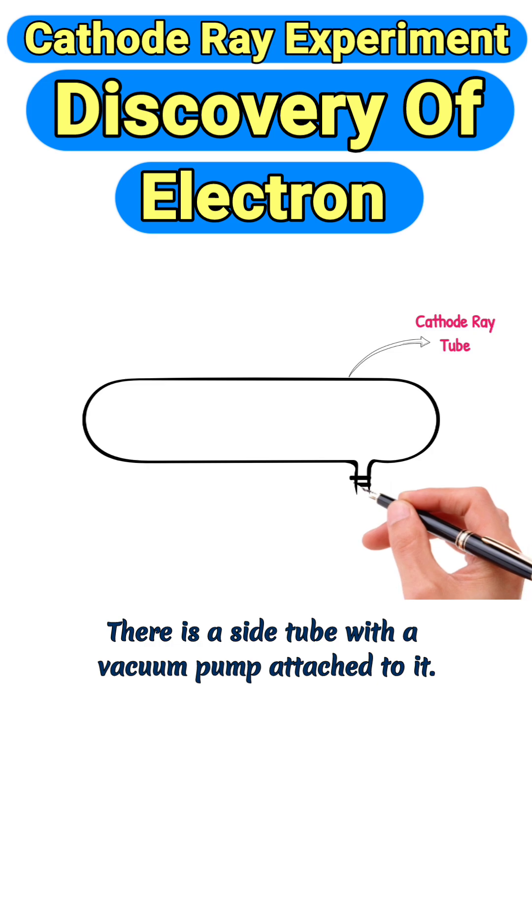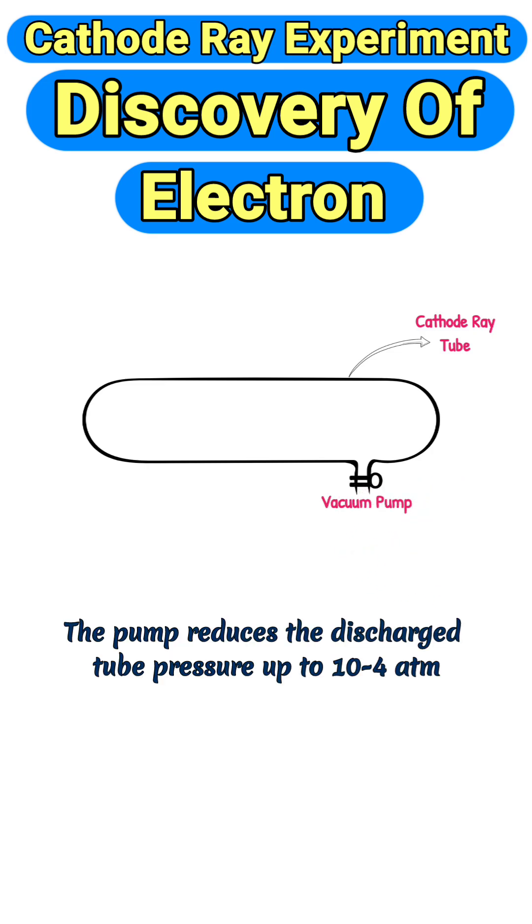There is a side tube with a vacuum pump attached to it. The pump reduces the discharge tube pressure up to 10^-4 atmospheres.